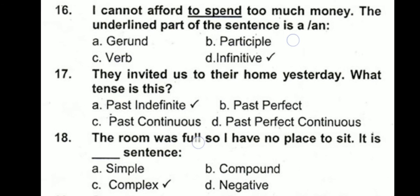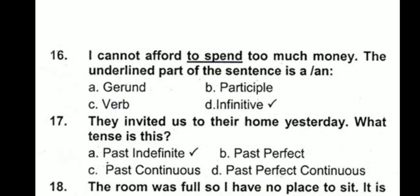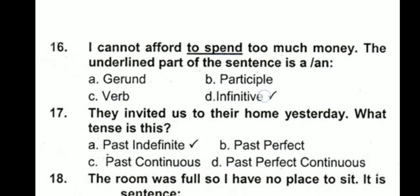Number 16: 'I cannot afford to spend too much money.' The underlined part is 'to spend.' The options are gerund, participle, verb, or infinitive. Infinitive is the correct option. Whenever we put 'to' before a verb, it is called an infinitive or to-infinitive. A verb is an action word. A participle is a verb used as an adjective. A gerund is a verb used as a noun. An infinitive is a verb preceded by 'to.' After 'to' we always use the first form of the verb — 'to spend.' So D is the correct option.